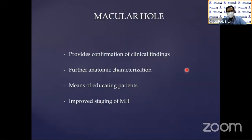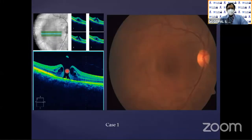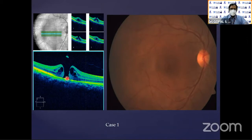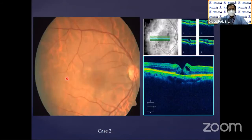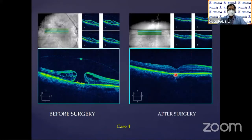Macular hole classification by Gass has been closely followed by OCT classification. You can see full-thickness macular hole, full-thickness macular hole without BMT, large macular hole, and lamellar macular hole. You have to scan through the hole to capture it — surrounding it you may see something like edema, so it is very important to know which scan line you are on, otherwise you may mistake it for edema. There is also a hole-forming factor we can take into consideration before surgery.